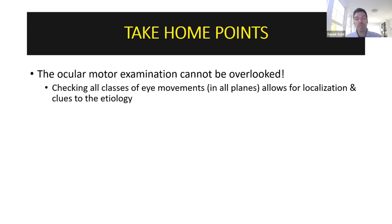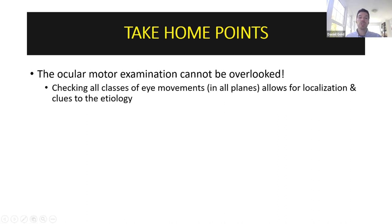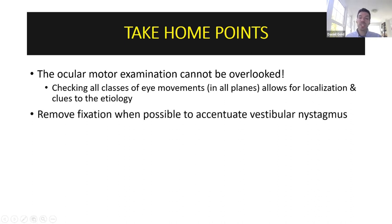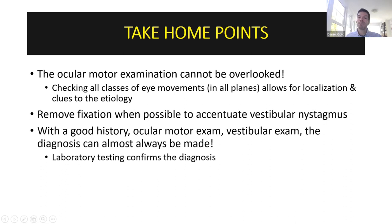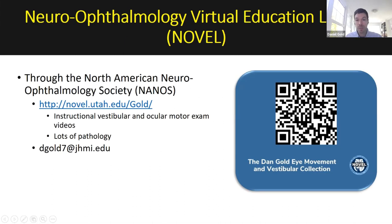Take-home points: the ocular motor examination is extremely helpful and cannot be overlooked. You must check all classes of eye movements in all planes — if you don't check vertical saccades, you'll miss the patient with a riMLF syndrome. This allows for localization clues and etiology. Remove fixation when possible to accentuate vestibular nystagmus; the penlight cover test works without fancy equipment. With a good history, ocular motor exam, and vestibular exam, the diagnosis can almost always be made at the bedside — lab testing confirms that diagnosis.